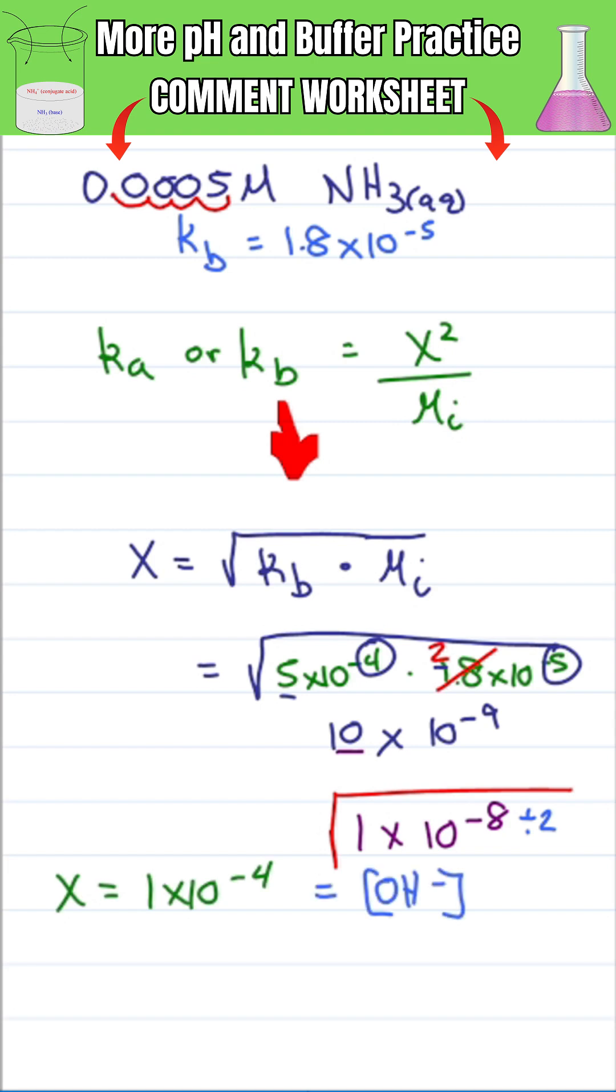Negative log OH- will give me my pOH. Just take the absolute value of the exponent and then 14 minus 4 gives me a pH of 10.